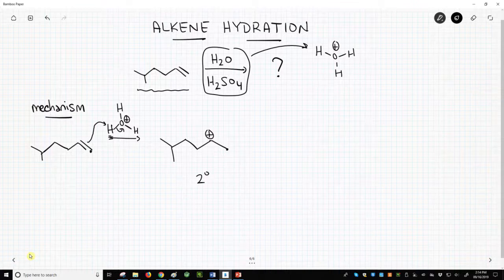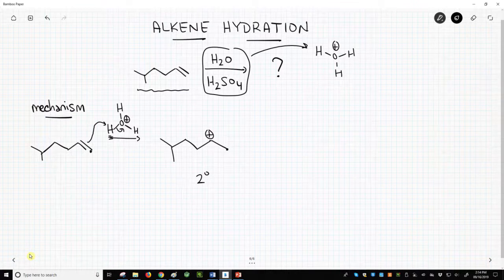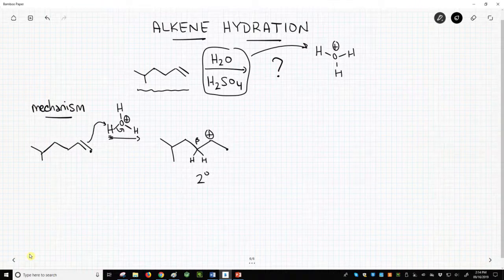In this case, there is no easy rearrangement that might give a tertiary carbocation. Hydride shifts occur from beta-hydrogens. These beta-hydrogens, if one shifted, would only give another secondary carbocation. That won't happen.